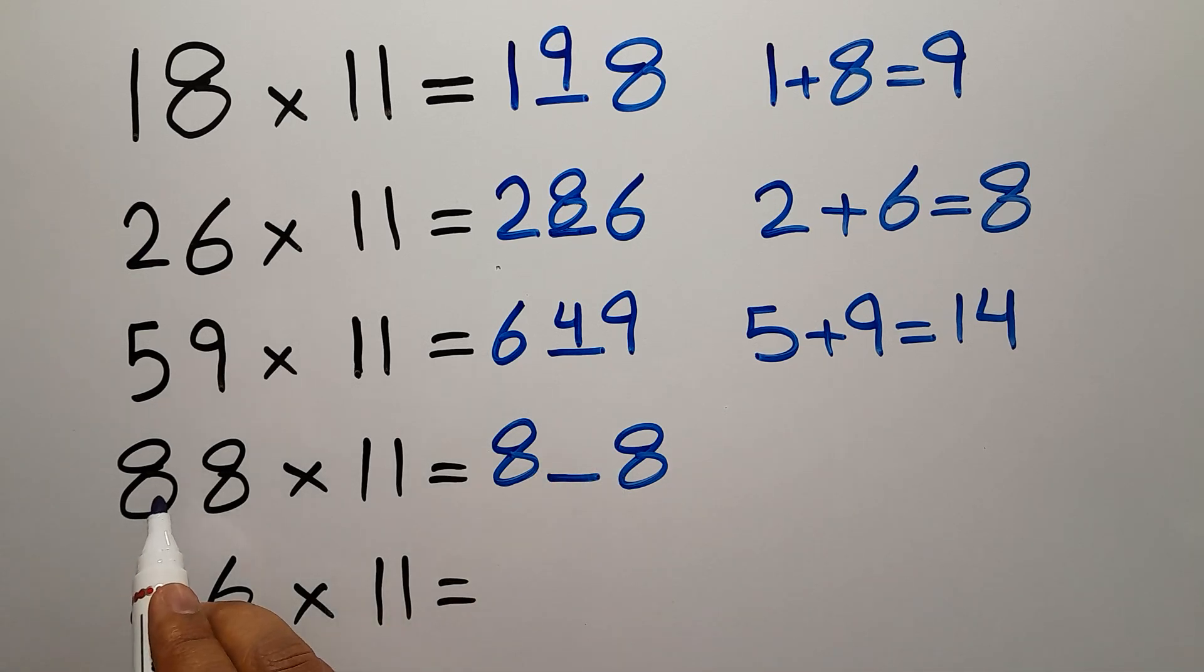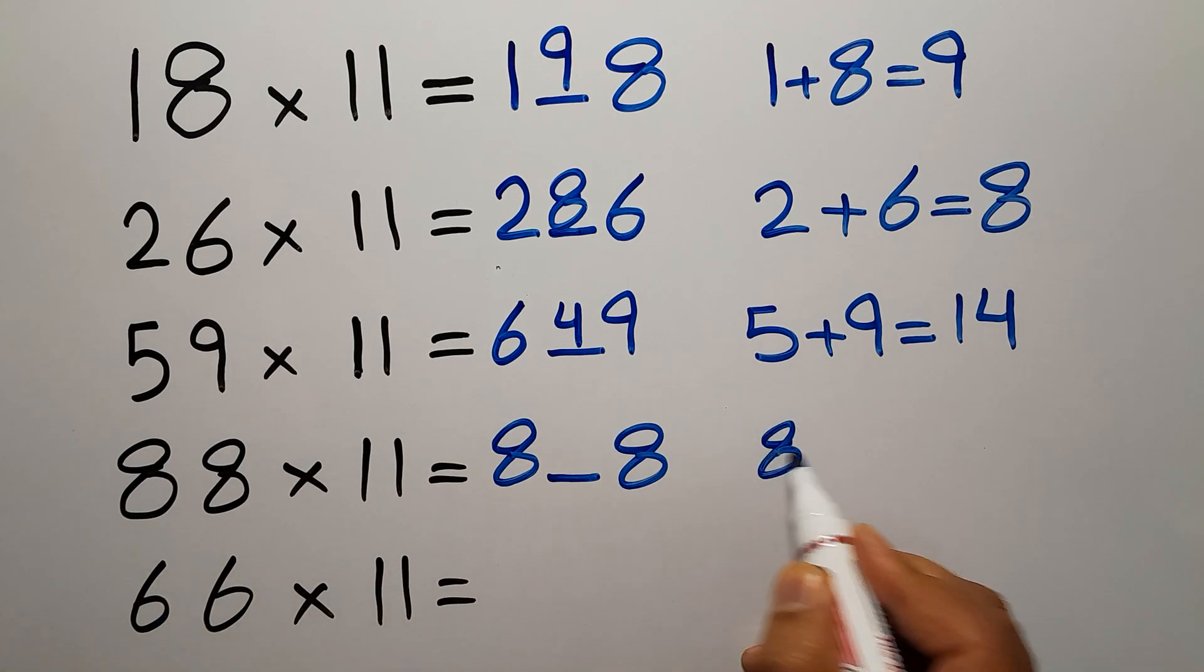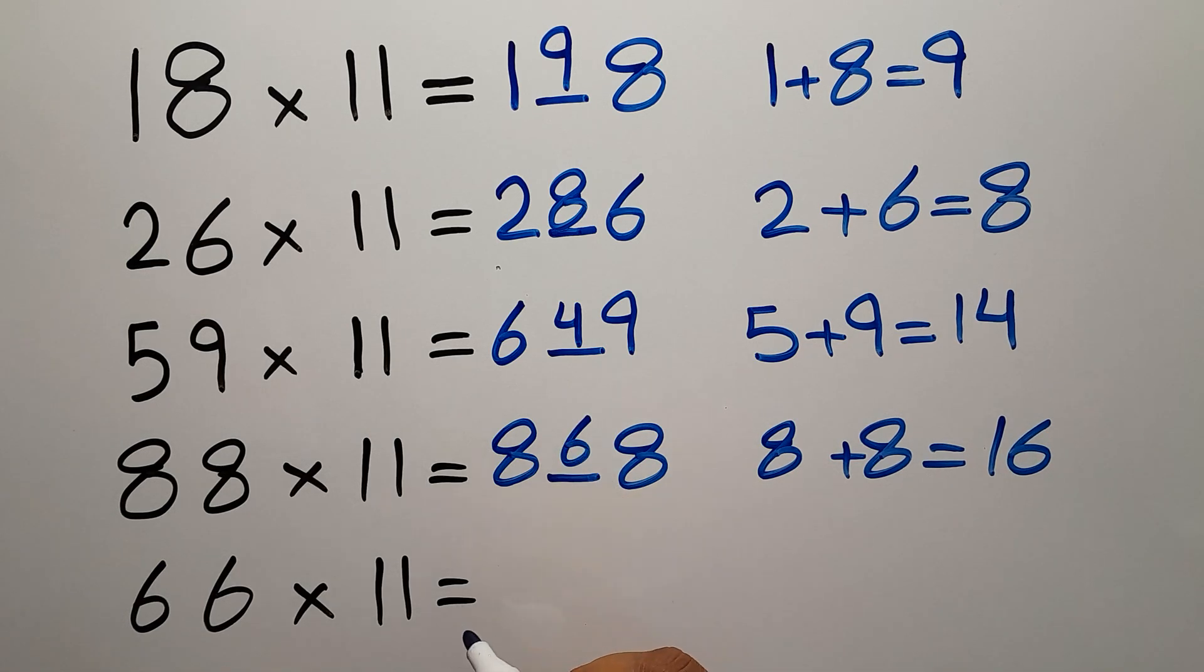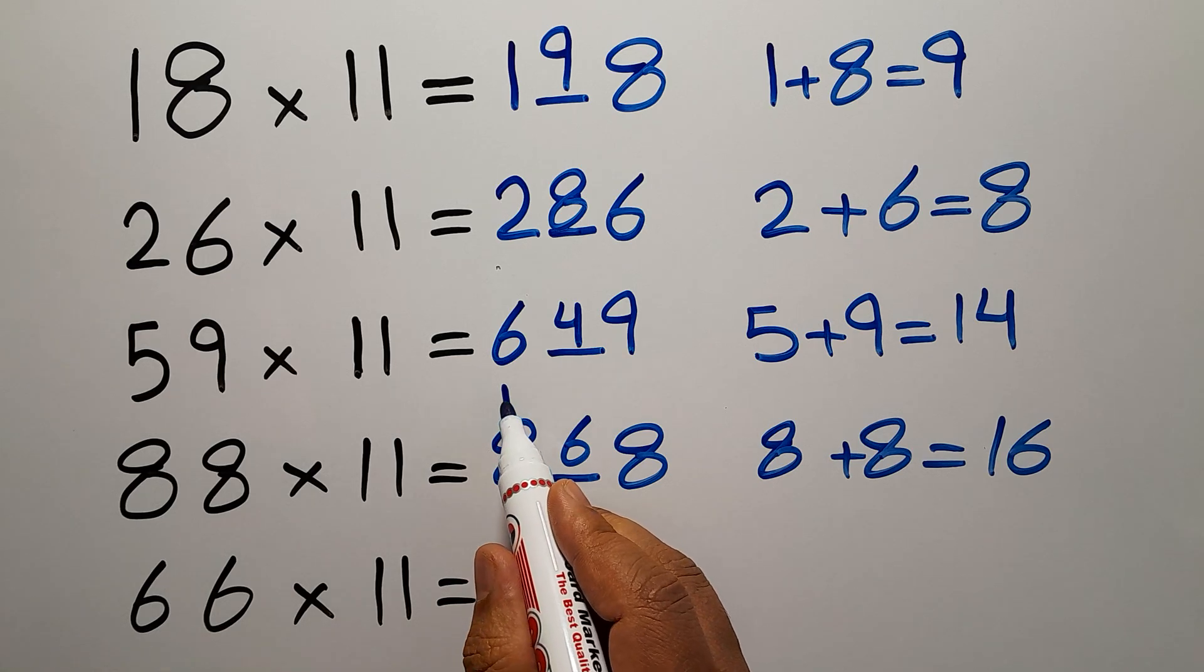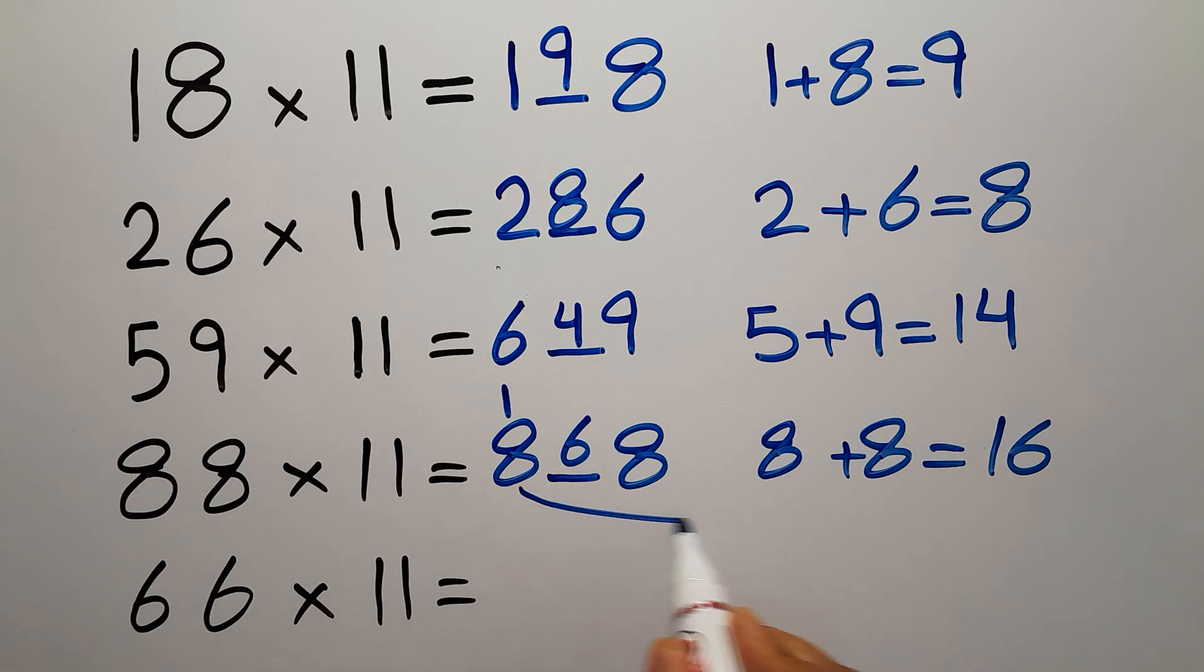We need to add 8 and 8 together. So 8 plus 8 gives us 16. Write 6 here and then carry 1 here to get 9. 1 plus 8 gives us 9, so the first digit of the answer is 9.